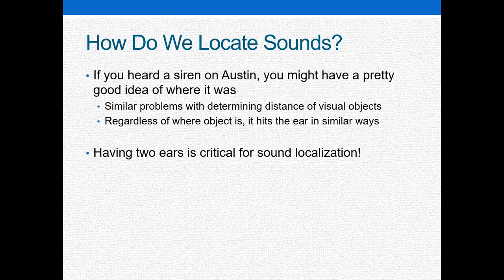Thankfully, we are capable of noticing differences in the timing of a sound or in the intensity of a sound to be able to locate things. And as we're going to see, just as having two eyes really helps us with distance by taking into account binocular disparity, two ears is also going to be very critical for judging where in the environment a particular sound is coming from.